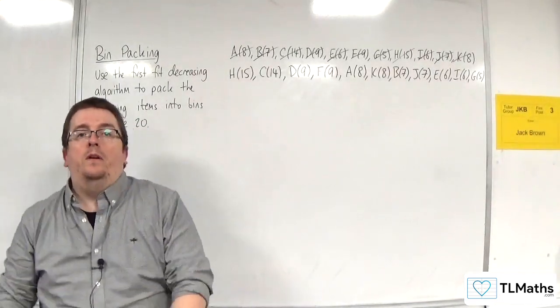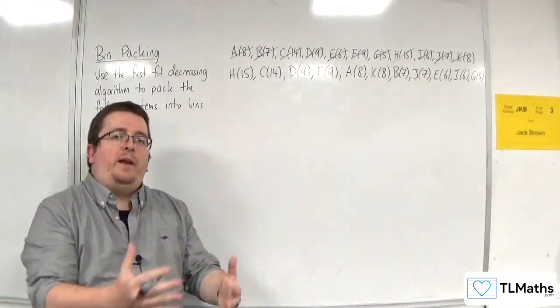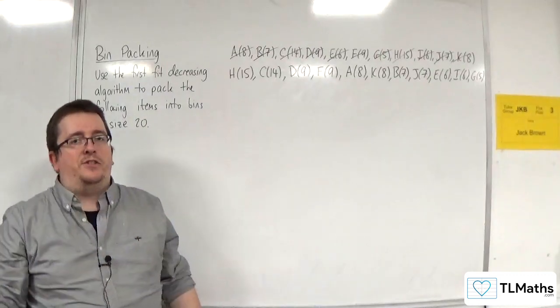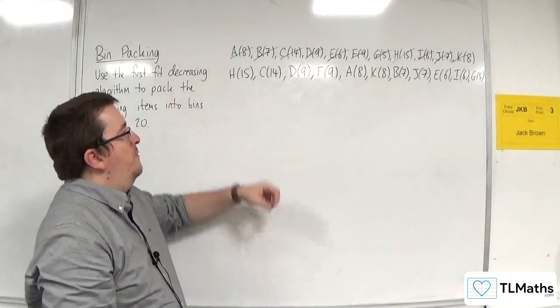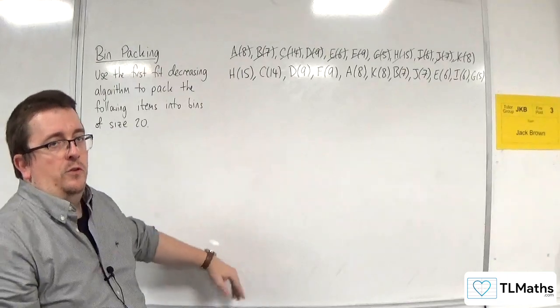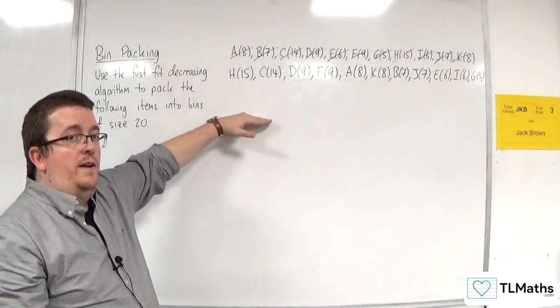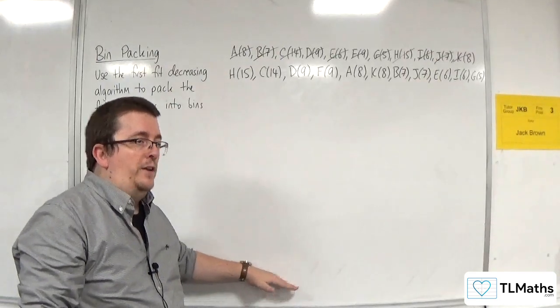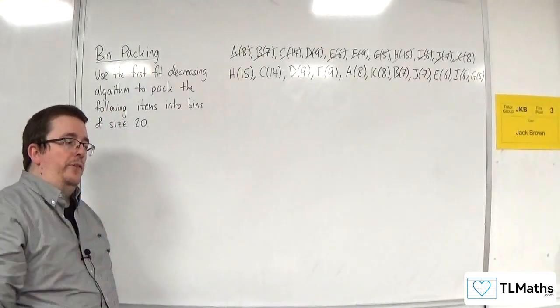So, again, we've got these items coming along on a conveyor belt. And each time, I'm going to pick up the item and put it in the next available bin. And I work from bin 1 to bin 2, bin 3, bin 4. So, if it can't fit in bin 1, and it can't fit in bin 2, and it can't fit in bin 3, then it goes into bin 4.